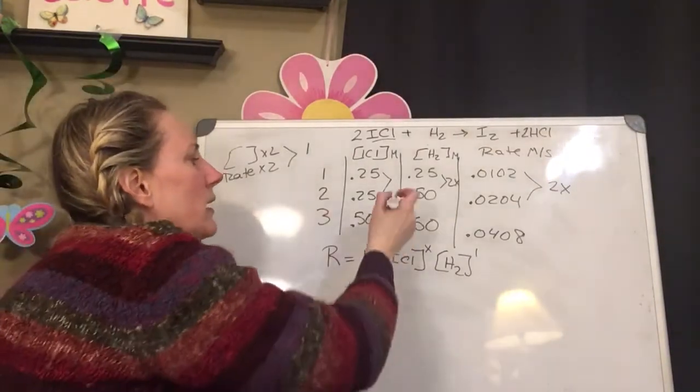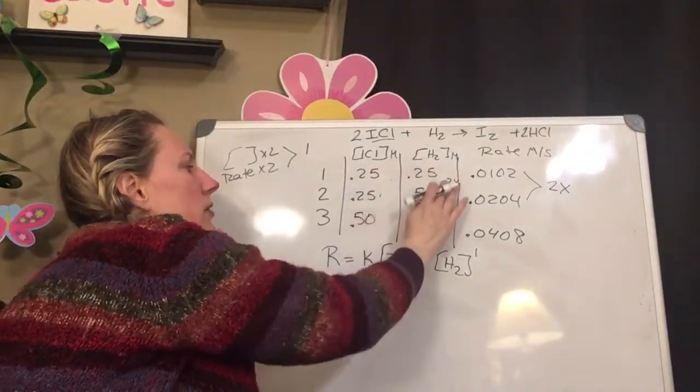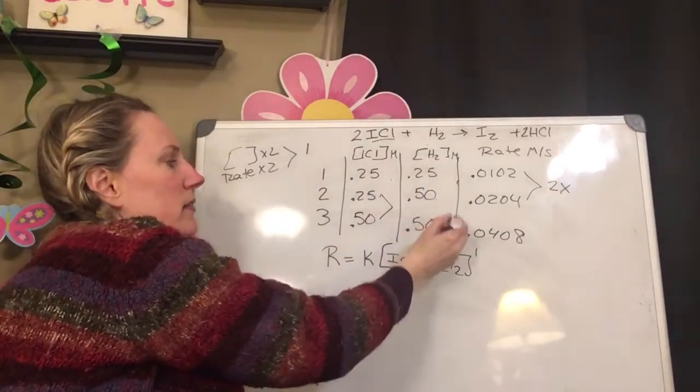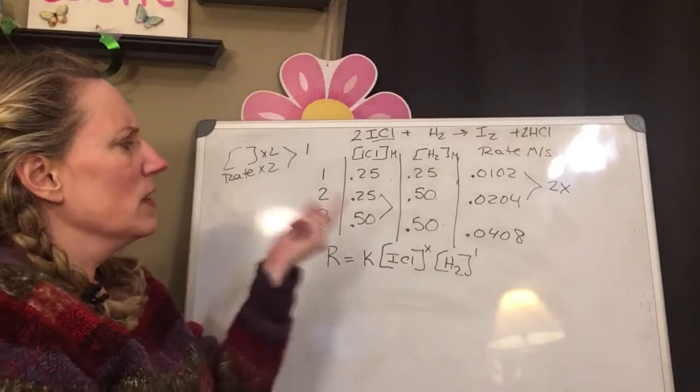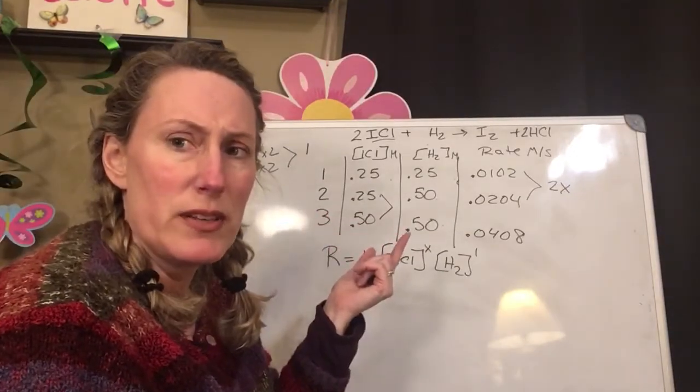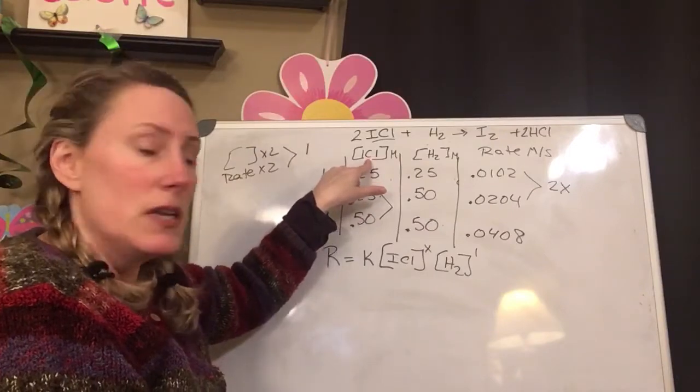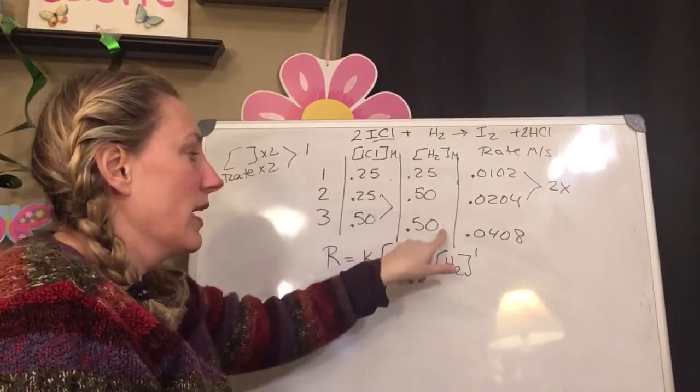So let's look now when the concentration of this doubles and this doesn't change. So now the change in my rate is going to be due to the increased concentration of the ICl. So again, you have to look at, you can't do these two.